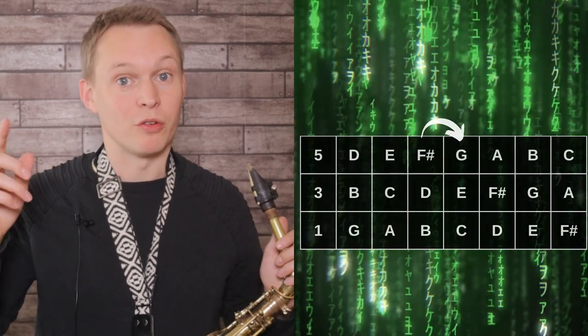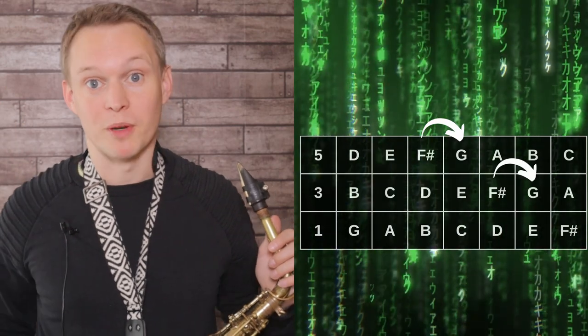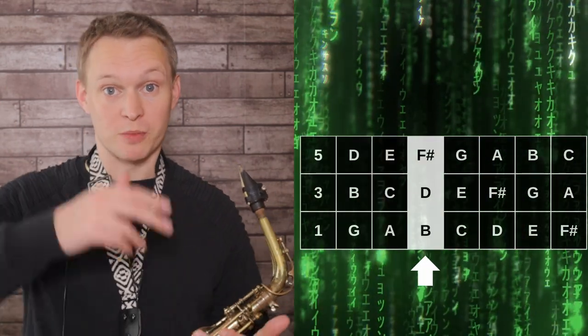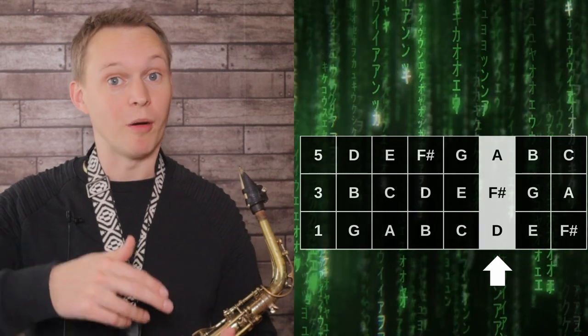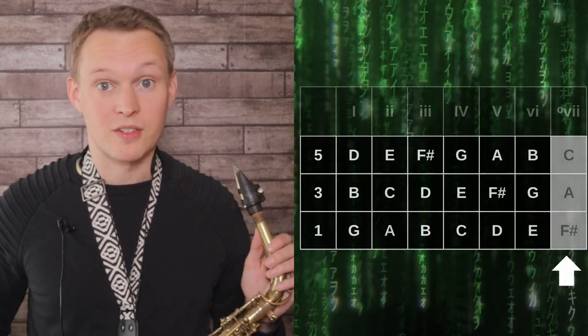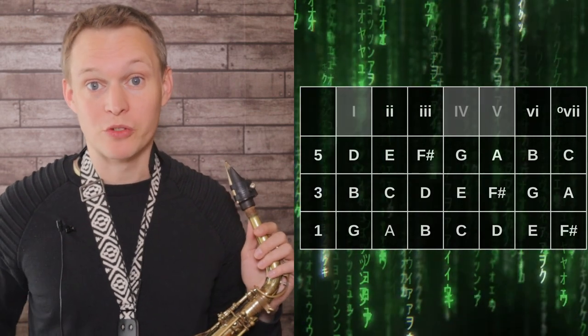You'll notice that once you get to the seventh note of the scale it just restarts again from number one. Now if you look up each of those columns from the bottom to the top, you'll see we're creating our arpeggios or our triads, and what we can also do is label these triads with their roman numerals.